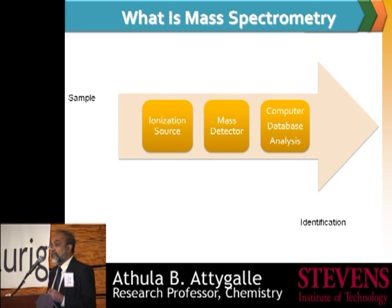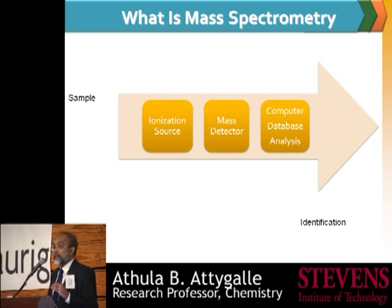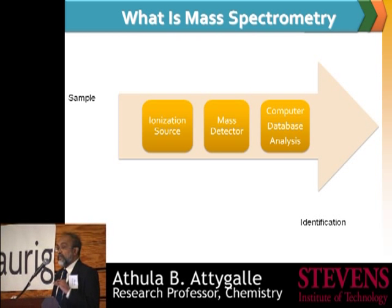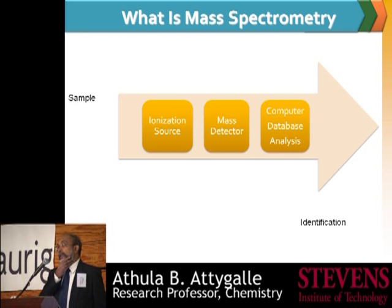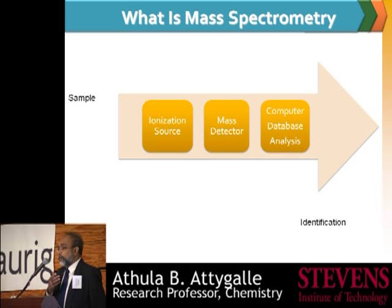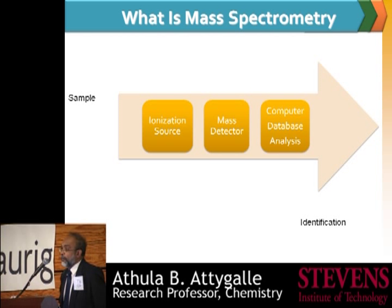Not only that, this technique can deal with mixtures — mixtures in very dirty, very difficult matrices like blood, urine, soil, and water. Very often we can identify compounds directly from these substrates. And very often we have to have the signals we generate — we call them spectra — stored in some kind of database, so we can do a very quick search.